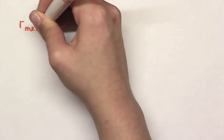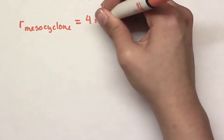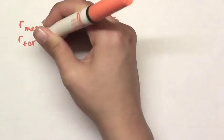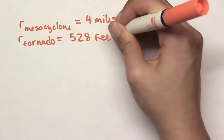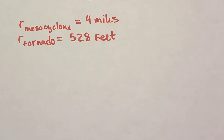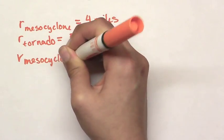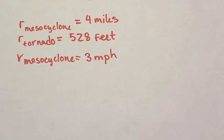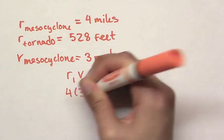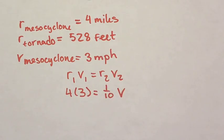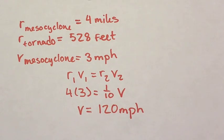For example, if we know that the radius of the mesocyclone is 4 miles, the radius of the tornado is 528 feet, and rotational velocity of the mesocyclone is 3 miles per hour, we can use R1 V1 equals R2 V2 to find the rotational velocity of the tornado to be 120 miles per hour.